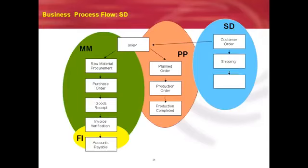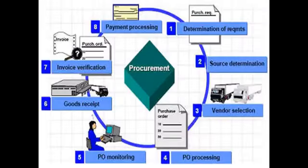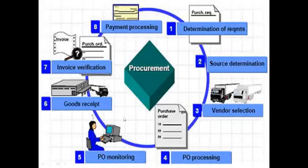This is the overall overview cycle of Materials Management: requirement identification, source determination, vendor determination, vendor selection, purchase order creation and processing, purchase order monitoring, goods receipt when material is received, and finally payment processing. Right from identifying the requirement of the material up to payment to the vendor — this total part comes under the module called Materials Management.